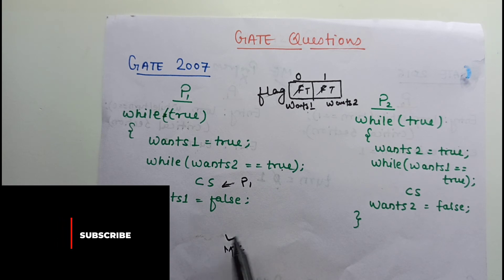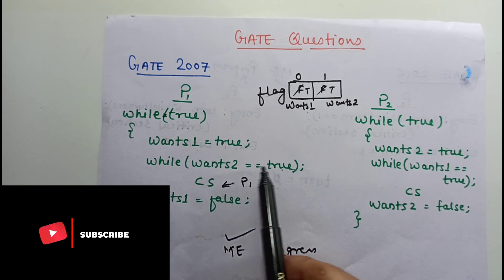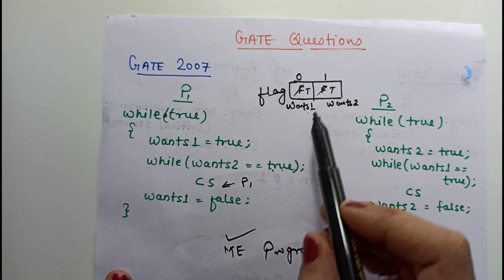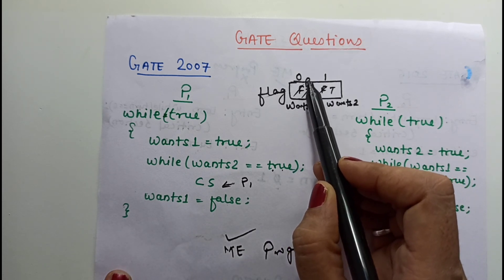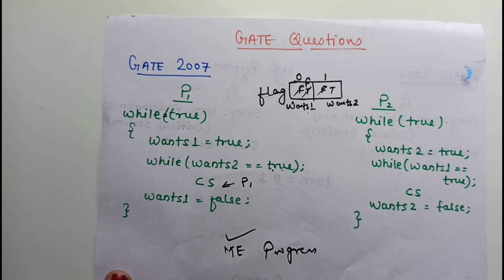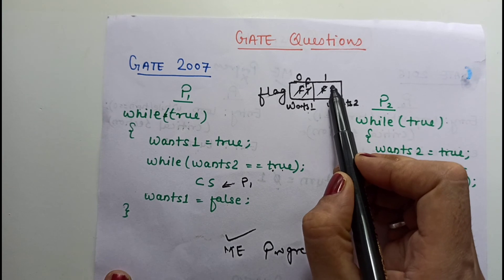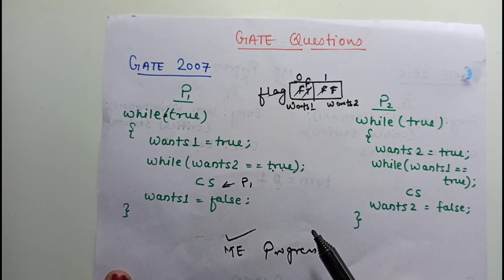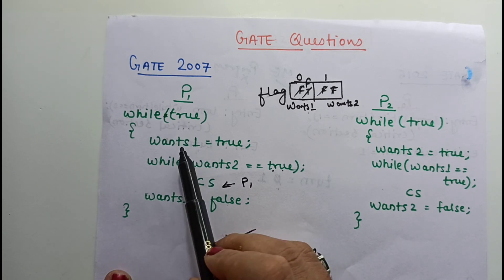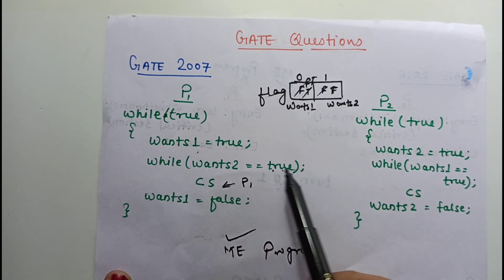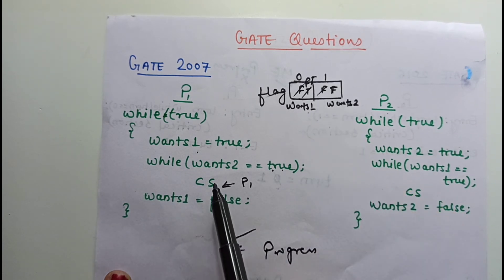Now let's check progress. If process P1 executes and then comes out of the critical section, it sets wants1 to false. Now P2 is also false (not in CS). P2 can now execute: it sets wants2 to true, checks wants1 — it is false — so P2 executes its critical section.